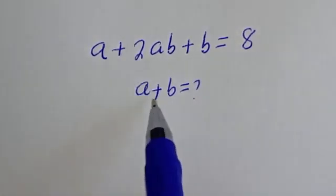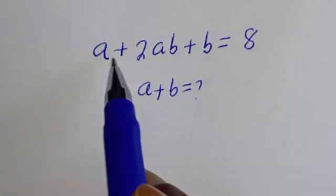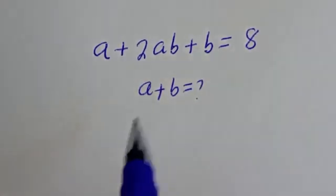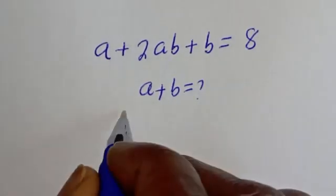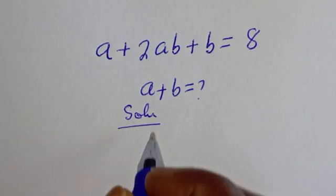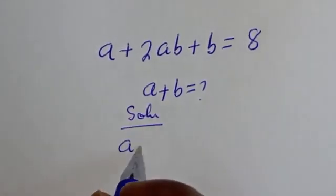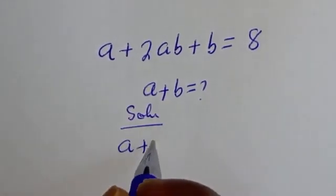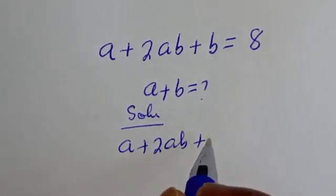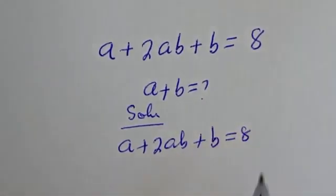How to solve for A plus B from this given math problem? A plus 2AB plus B is equal to 8. We have A plus 2AB plus B is equal to 8.